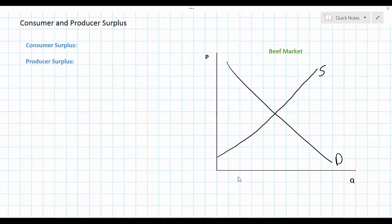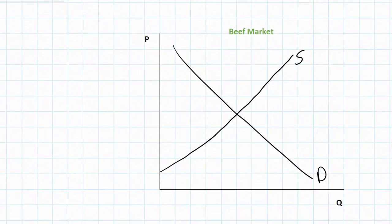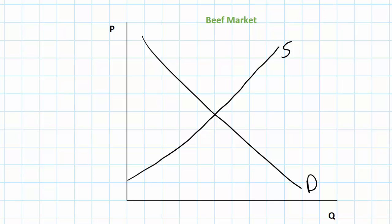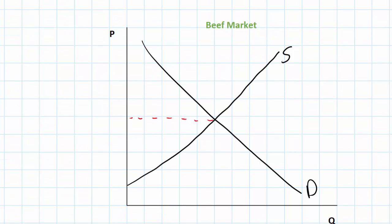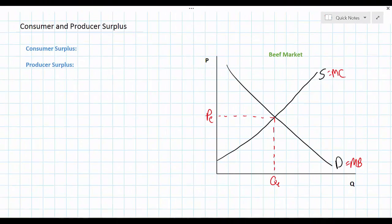In this video I'm going to introduce the concepts of consumer surplus and producer surplus in a market for a particular good. In previous lessons we introduced the concept of equilibrium price and quantity and explained why equilibrium price and quantity are considered the most efficient in a market. In this video we're going to expand on this concept and distinguish between consumer surplus and producer surplus in the market for a particular good.